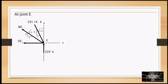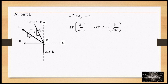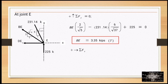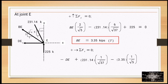At joint E, the unknowns are BE and DE. Summation of forces along y equals 0: BE times (2/√5) minus 231.14 times (6/√37) plus 225 equals 0. Solving, BE equals 3.35 kips in tension. Summation of forces along x equals 0: DE plus 231.14 times (1/√37) minus 3.35 times (1/√5) equals 0. Solving, DE equals 36.35 kips in tension.